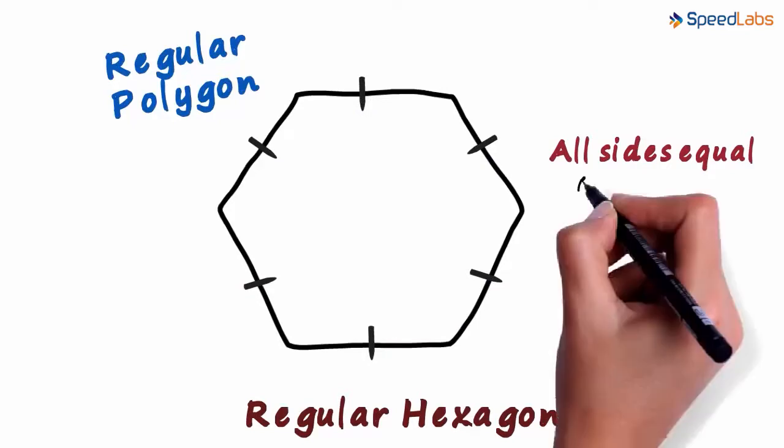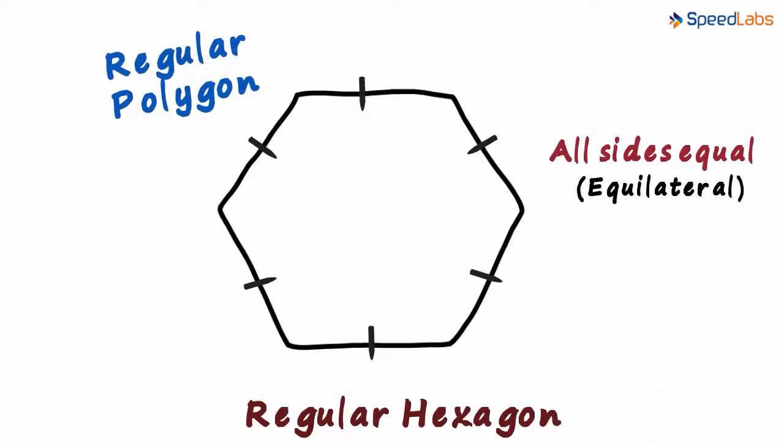We also say that it's equilateral. We can also see that six angles are formed inside a regular polygon.